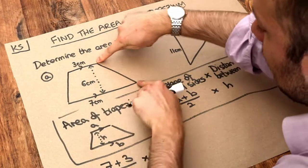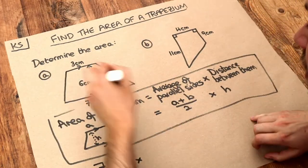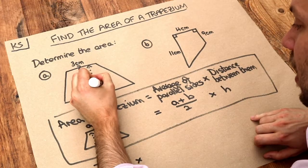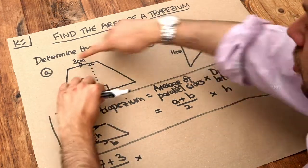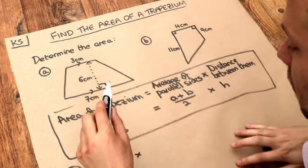What's the distance between these two parallel sides? Well it's the six and this distance always has to be perpendicular at right angles to the direction of the two parallel sides.